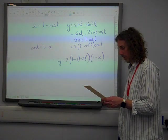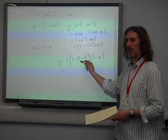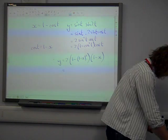And so we're going to do that substitution. Cos t is 1 minus x. Y is 2 times (1 minus (1 minus x) squared) times (1 minus x). And that's us eliminating t in a nice way from our equation. And, well, we've got it.